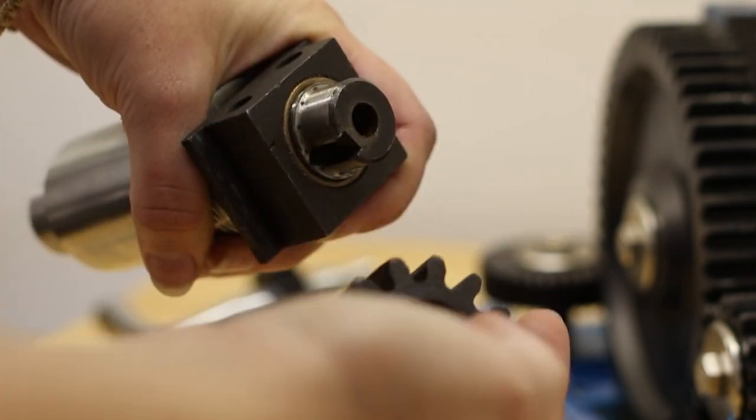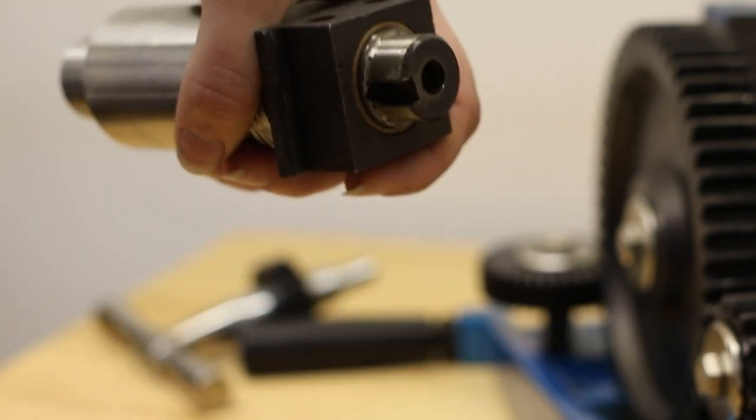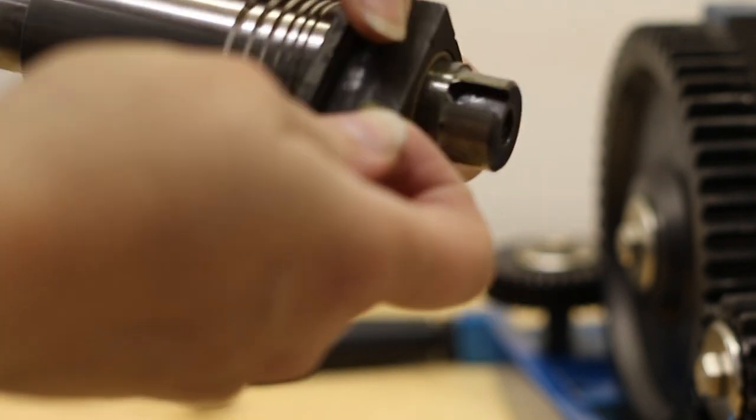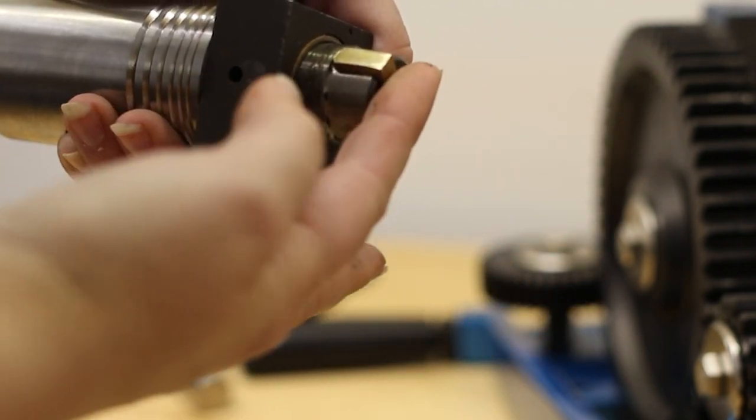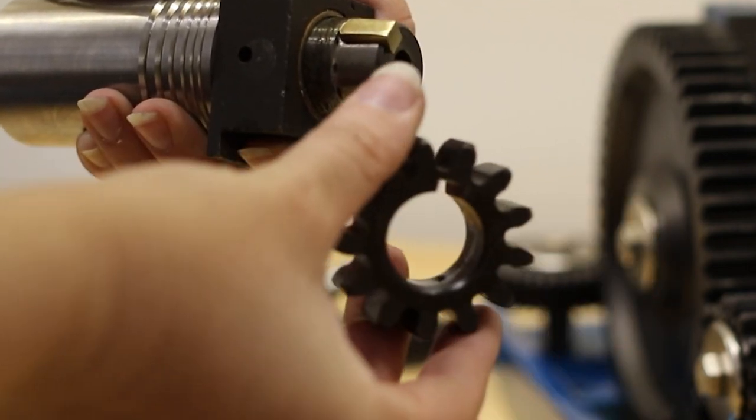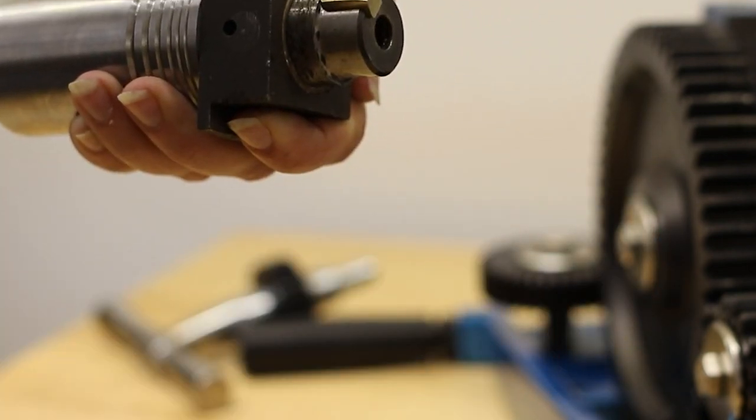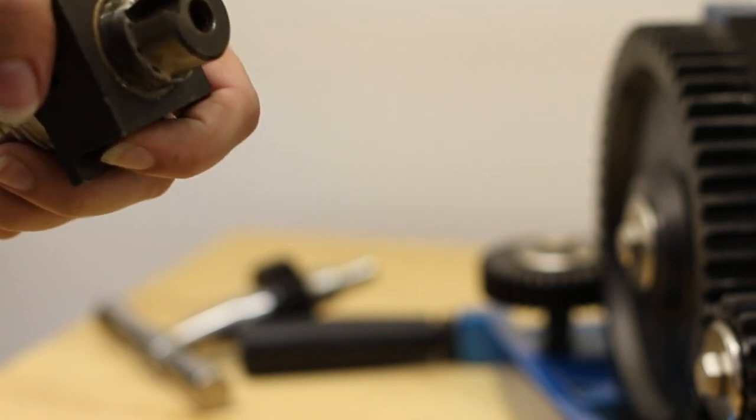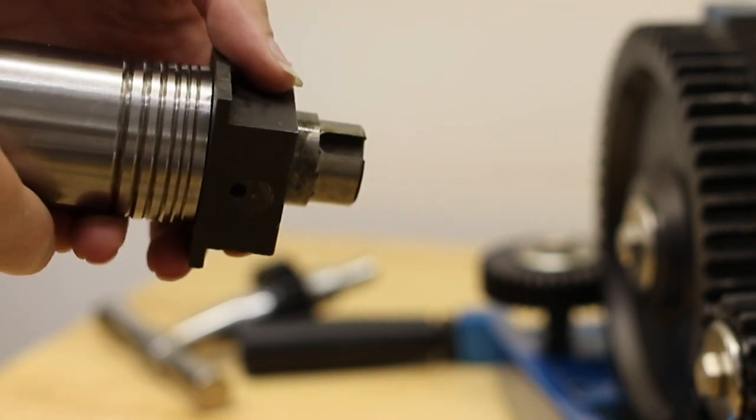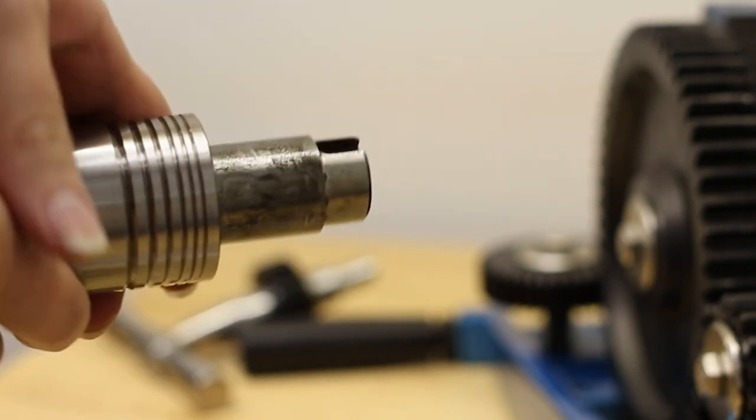Once you get that off, you will see that there's this little piece of key stock that keeps the gear in place. I'm going to try to show you how that fits on there, but my hand gets in the way. Sorry about that. It's kind of hard to see what's going on here. But yeah, so that's what makes the gear move, so make sure you don't lose that little block of metal. So now you can slide this last bushing off.